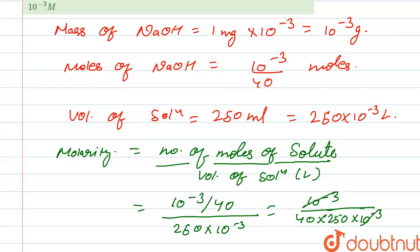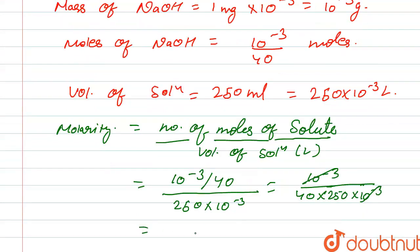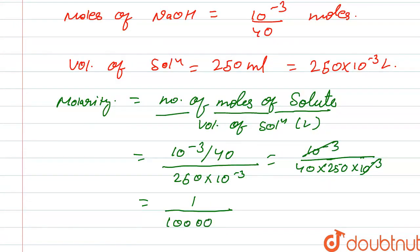So 10 to the power minus 3 cancel out. So it becomes 1 upon 10,000, so it is 10 to the power minus 4. We can write here 10 to the power minus 4 M. This is the value of molarity of solution.